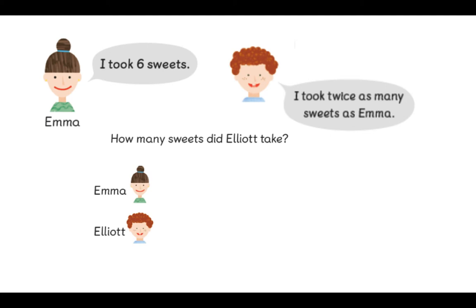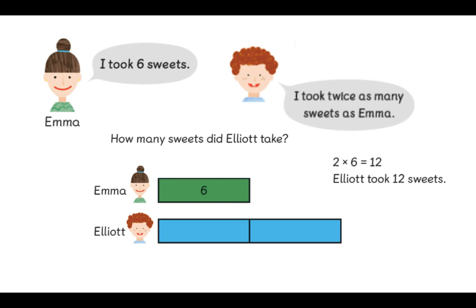I have started by a bar model. I'm going to draw Emma's bar, which is going to be six sweets. I know that Elliot took twice as many. So I'm going to give him the same bar as Emma and another bar, because he took twice as many. He took double. My number sentence would be two times six, which is twelve. So I know that Elliot took twelve sweets. Could you explain why I am correct? I am correct because Elliot took twice as many. So this means he took double. When we're finding double, it means we multiply by two. So I was right to multiply six by two.